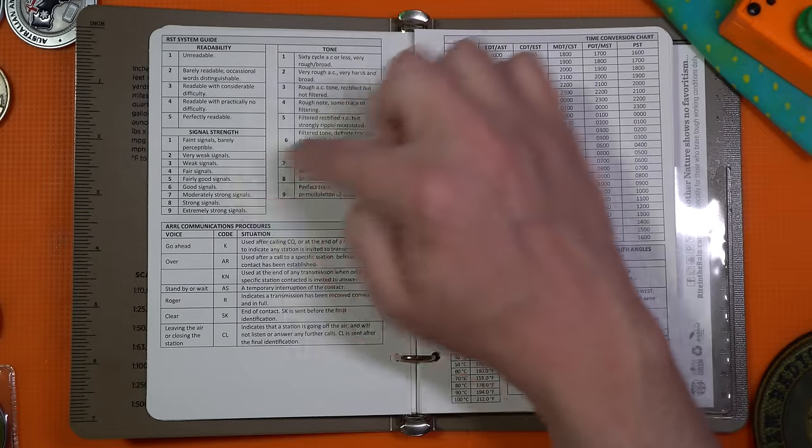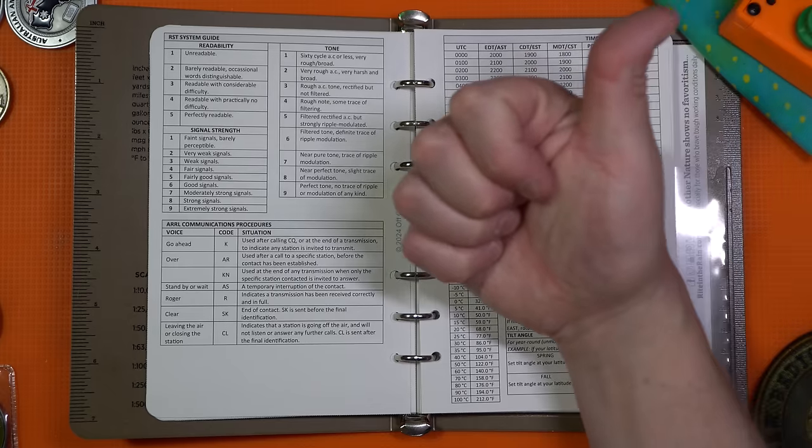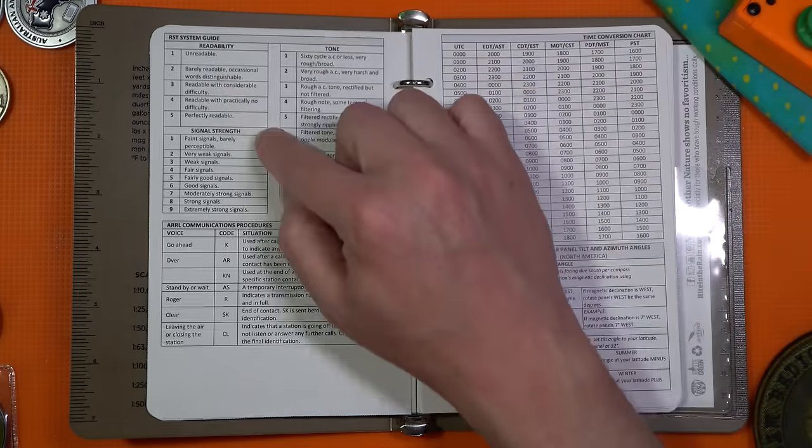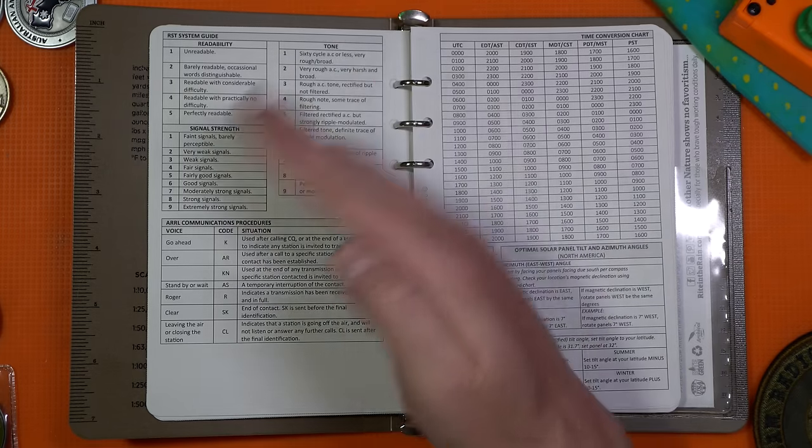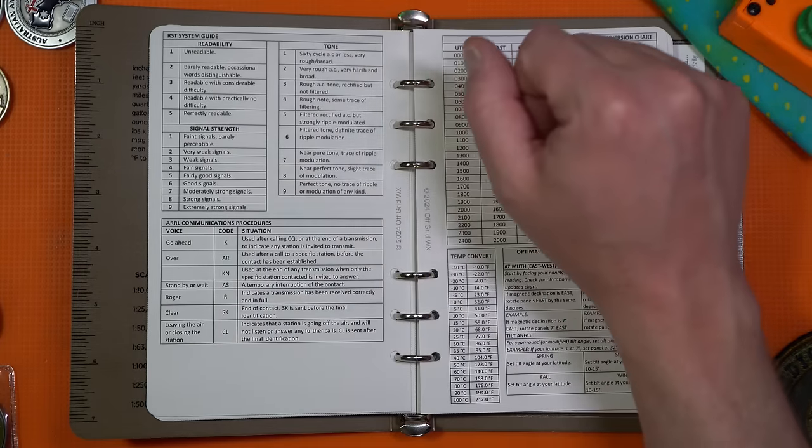Here is something, the RST system. So readability, meaning how good the signal was. So when we say it's a five, nine or a five, five, nine in the case of Morse code. So five is perfectly readable. And then one through nine is basically that S meter display. And then lastly, tone is one through nine, again, for Morse code operators.